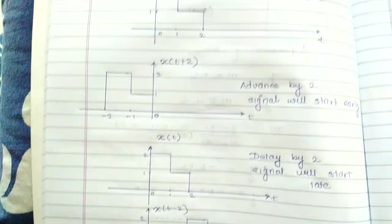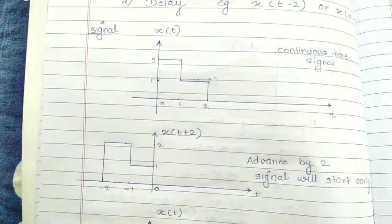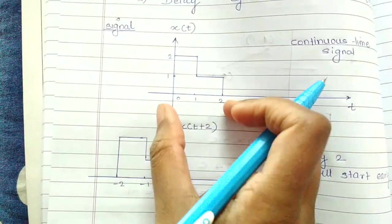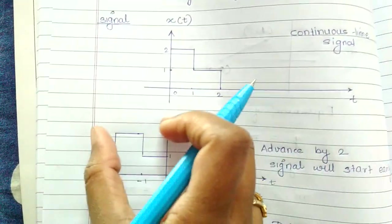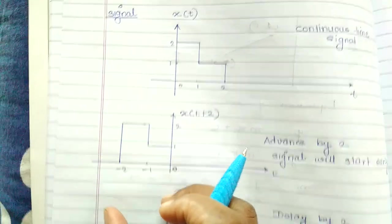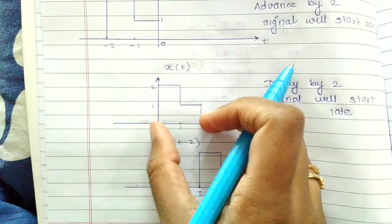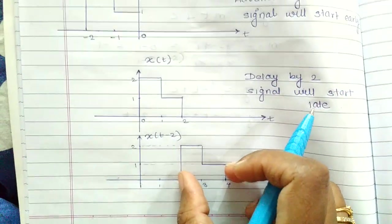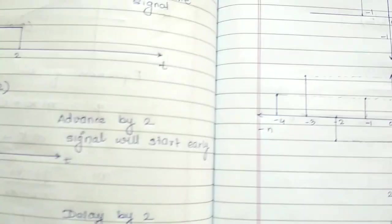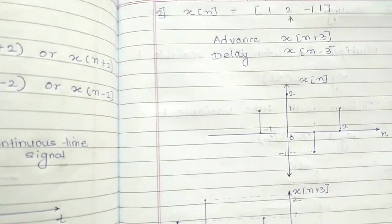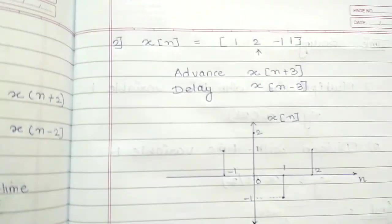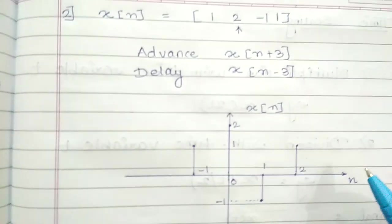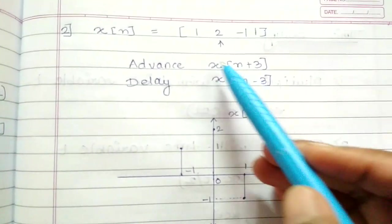So if you compare the two: an advance signal is a left shift and a delayed signal is a right shift. Now moving to the same example — advance and delay for a discrete signal.